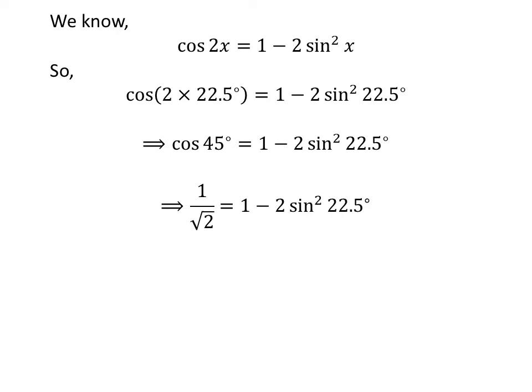We know the value of cosine of 45 degrees is equal to 1 upon square root of 2. So, 1 upon square root of 2 is equal to 1 minus 2 times the square of sine of 22.5 degrees.